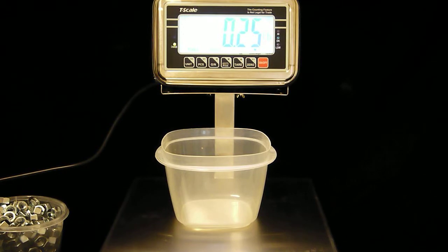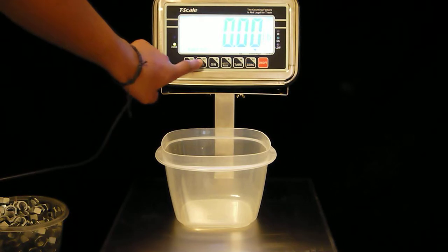Now we're going to zero out the balance by pressing the tare key. Once we're at zero, we're going to press the pieces key.